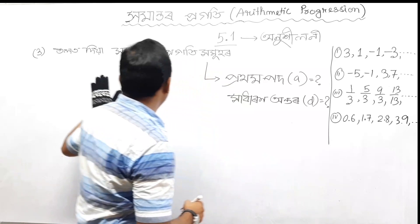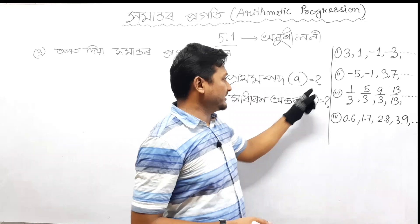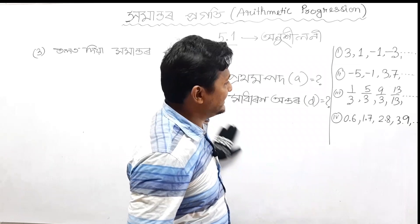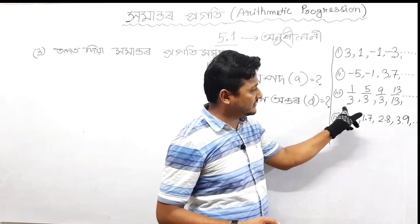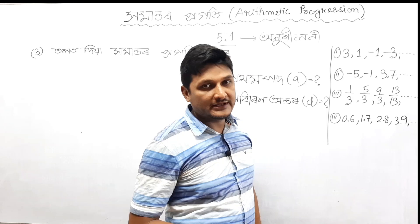We will find the prathampad (first term) and hadaranantar (common difference). After finding the hadaranantar, we will find the prathampad hadaranantar. Prathampad hadaranantar uliava lagi ba.